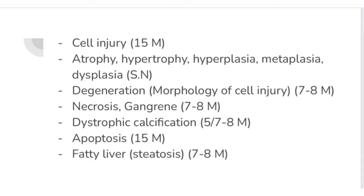The first question from cell injury is: define cell injury and describe it in detail. I have already uploaded a video on cell injury from an exam point of view. In that, we cover two types — irreversible and reversible cell injury. The sequence is: first define, then etiology, then pathogenesis and types — that is asked for 15 marks. After that, cellular adaptations — atrophy, hypertrophy, hyperplasia, metaplasia, and dysplasia — these can be asked as short notes for 5 marks.